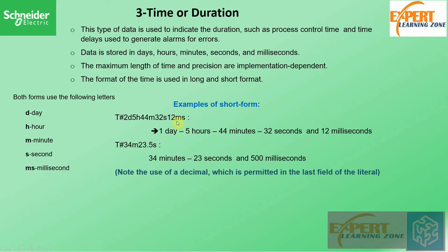You can also write it in a format where we convert the milliseconds as a fraction of a second. For example, 34 minutes, 23 seconds and 500 milliseconds can be written as 34M23.5S. Note the use of the decimal, which is permitted in the last field of the literal.